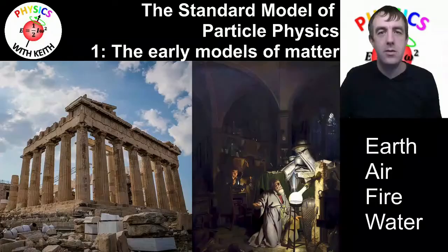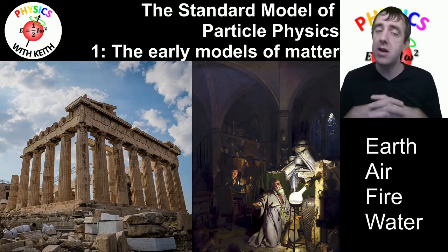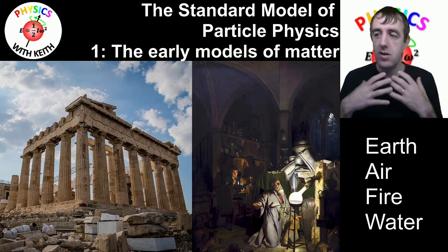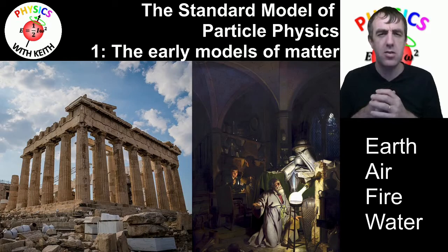As most physics stories start, this one starts in ancient Greece, with the philosophers who started by trying to decide what matter was. They broke matter down into four types: there was solid matter, there was liquid matter, there was gaseous matter, and there was matter associated with energy, with heat. And that's the way that the ancient Greeks understood the universe.